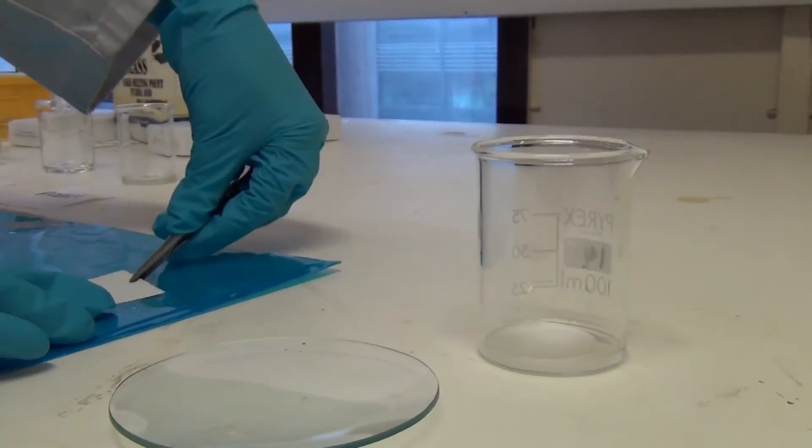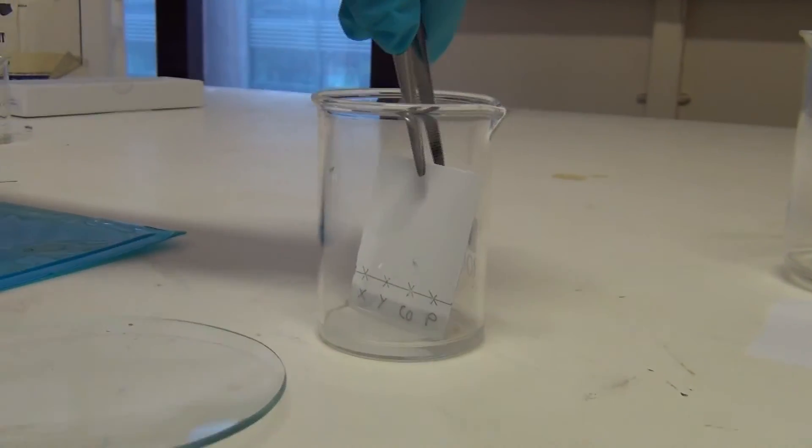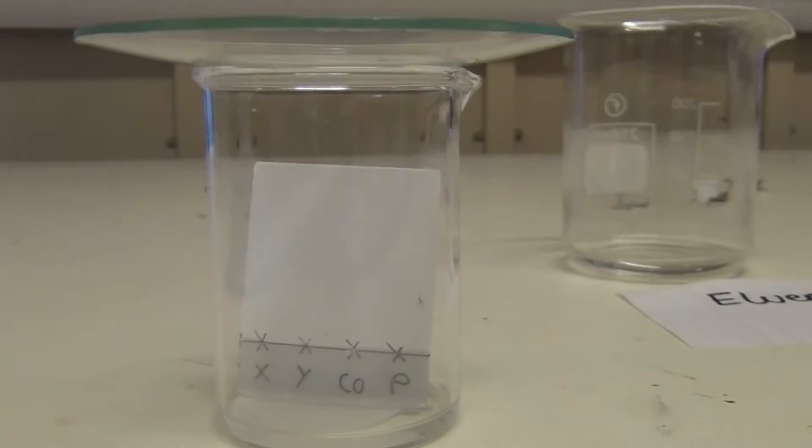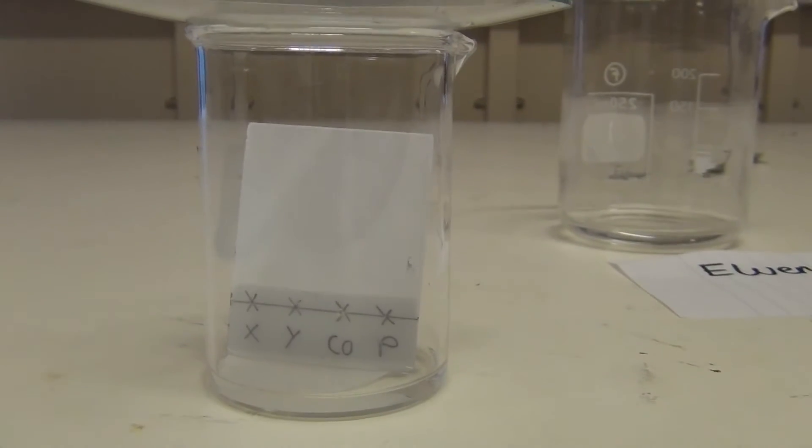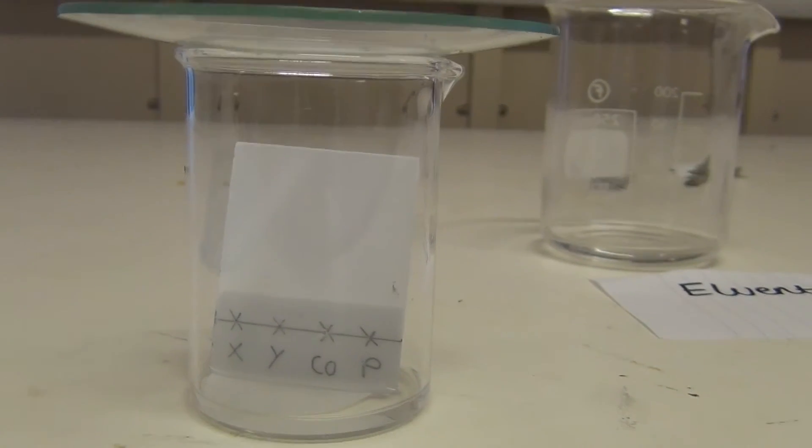Once the chamber is saturated with eluent, remove the lid and using tweezers carefully place the TLC plate onto the bottom of the chamber, and immediately place the lid back onto the top.